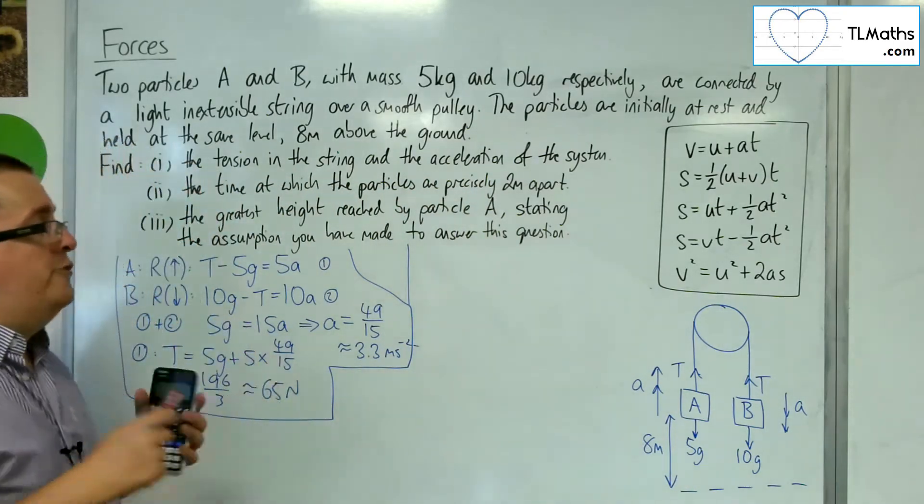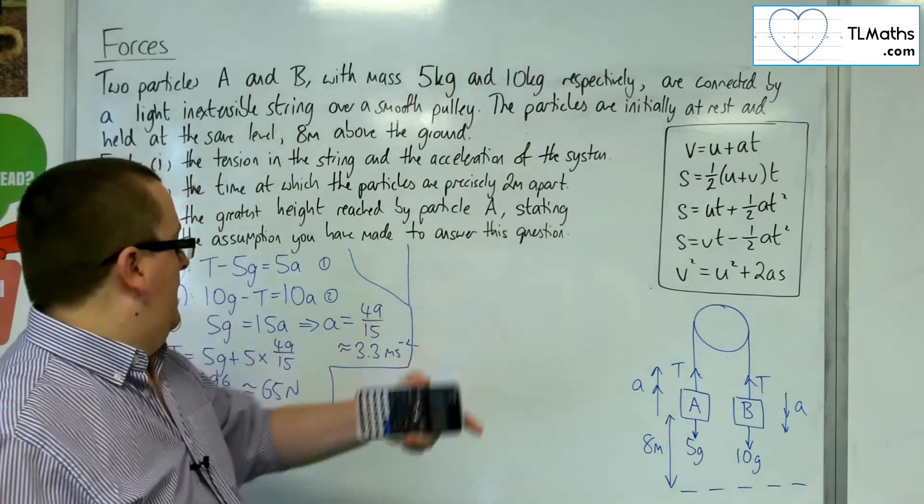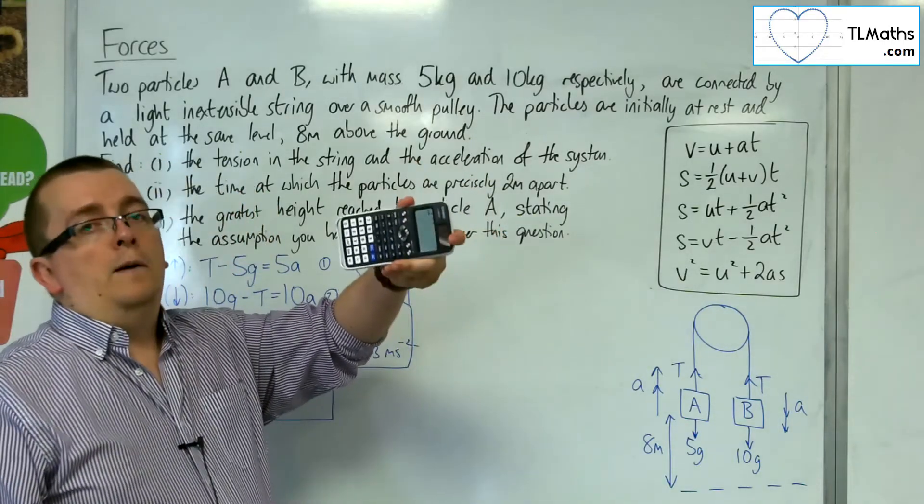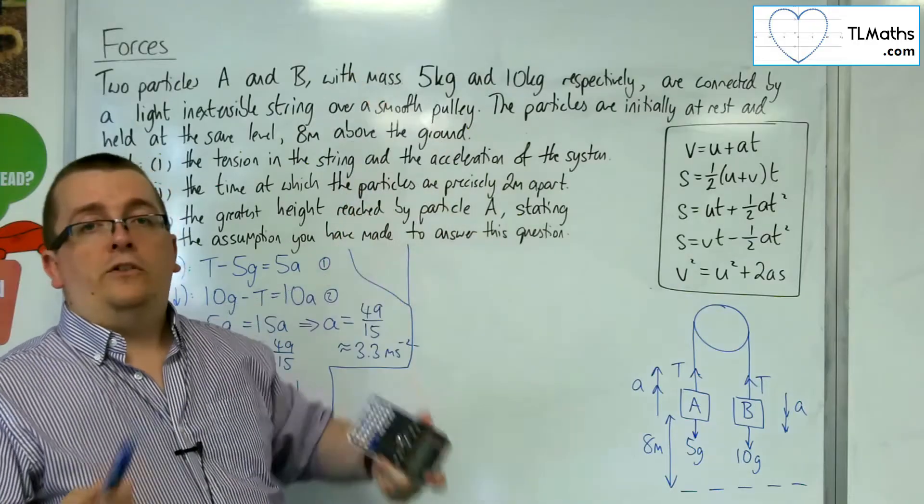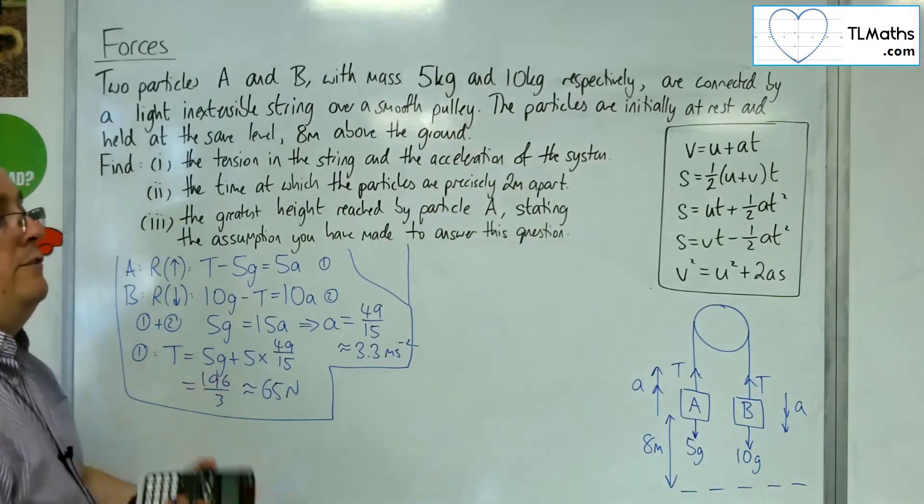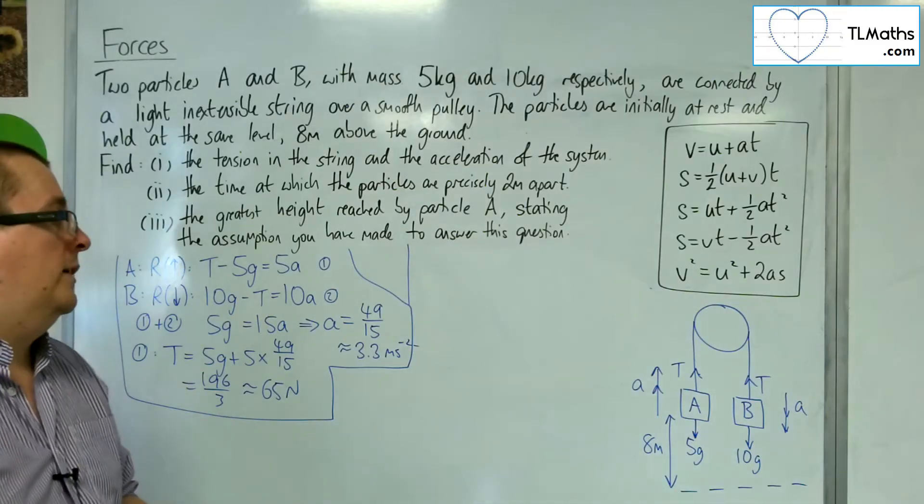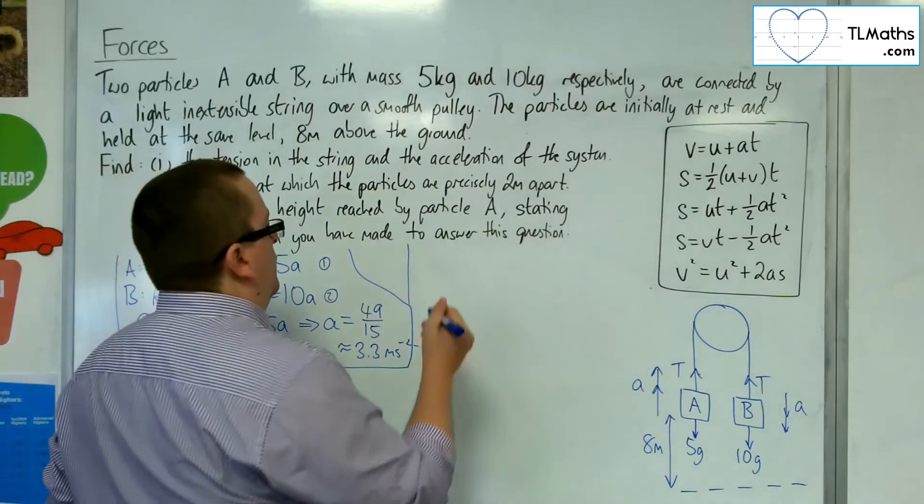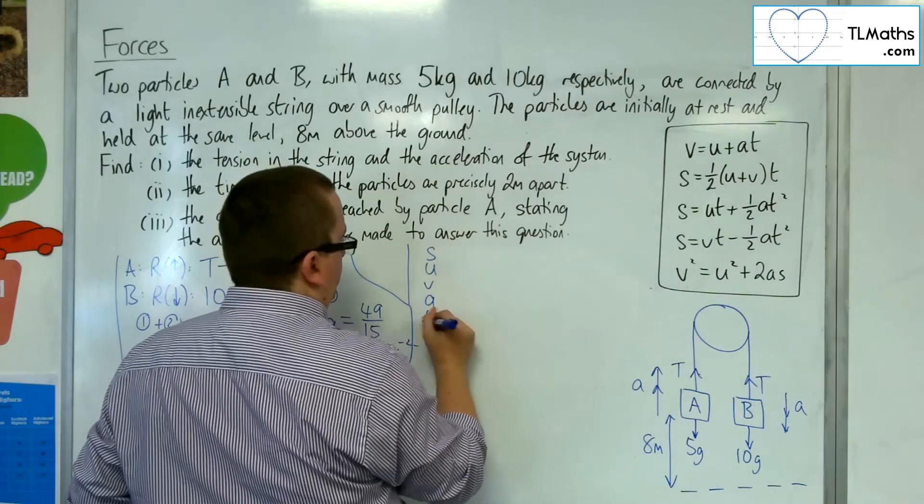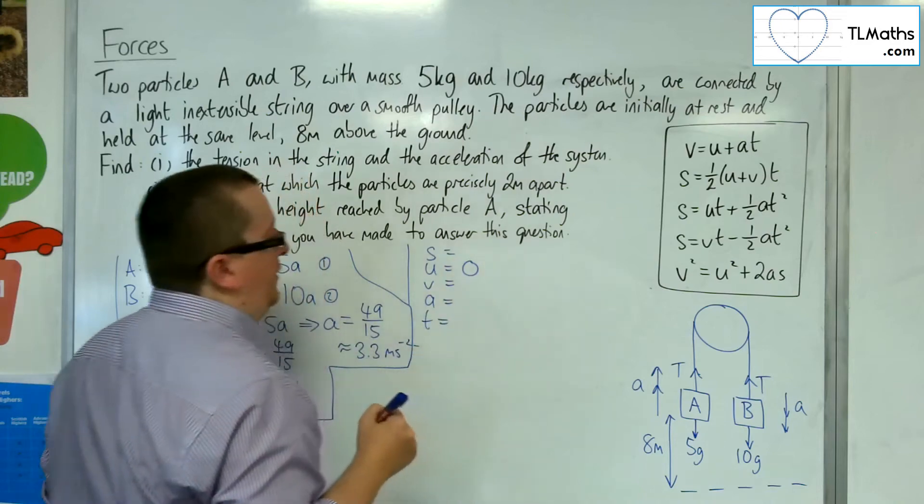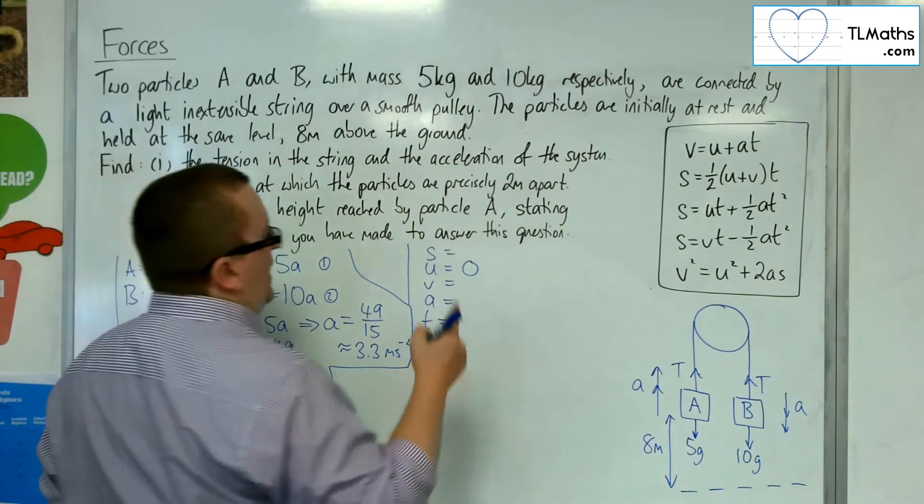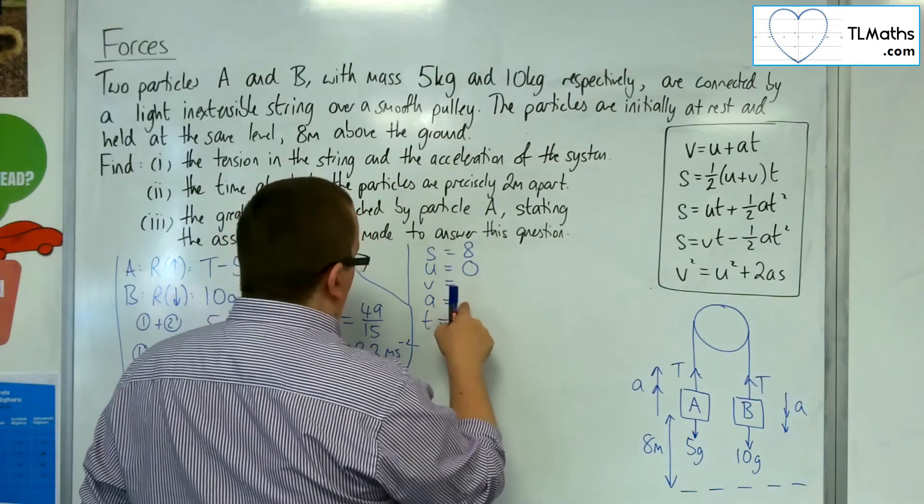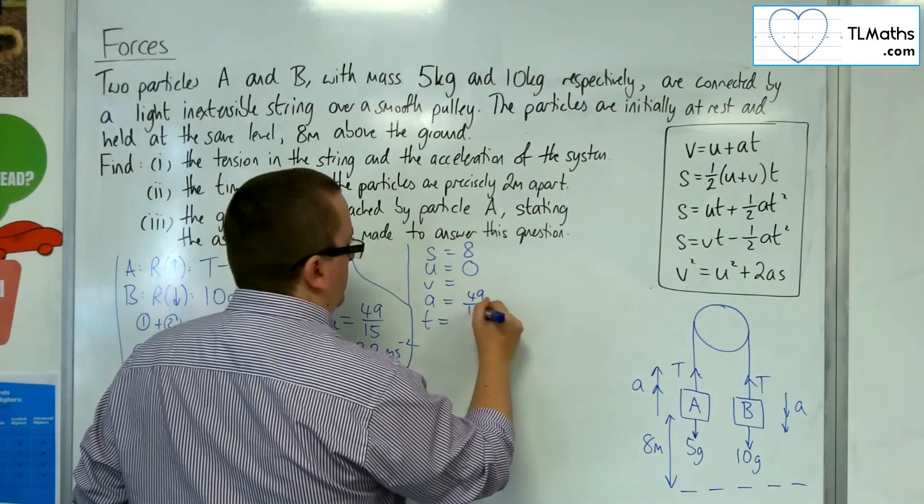And because we've got two different accelerations there, the acceleration that it's making at the 3.3 meters per second per second until particle B hits the ground, and then the acceleration will be minus 9.8 because it's just going to be under gravity, that means we're going to have to have two separate SUVAT situations, okay, in order to work this out. Okay. So, first of all, the first set of SUVAT then. The initial speed we know is zero, okay. We need A to have traveled 8 meters. We don't know the final velocity. We know the acceleration is 49 over 15. Okay. We don't know the time.